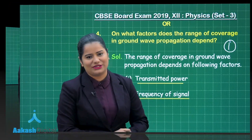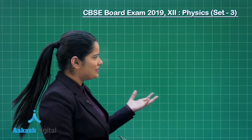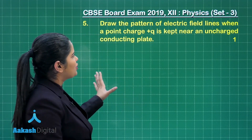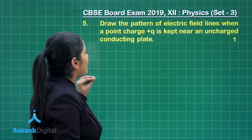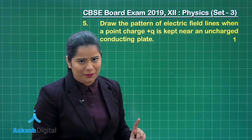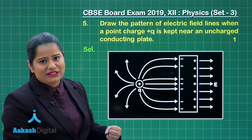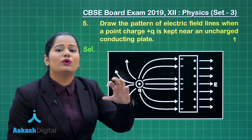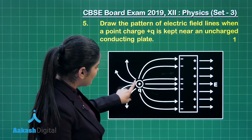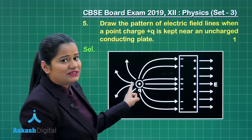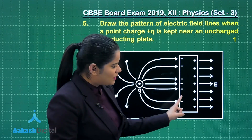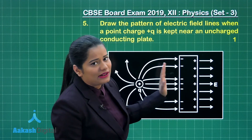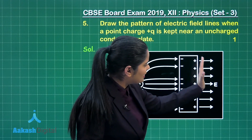Let us move on to question number 5. This question wants you to draw a pattern of electric field lines when a point charge +Q is kept near an uncharged conducting plate, and this question also holds one mark. From the positive charge, electric field lines are going to originate. This positive charge is placed near the conducting plate, and on the conducting plate these field lines will be intersecting it perpendicularly. This is how they are emerging out of the conducting plate.